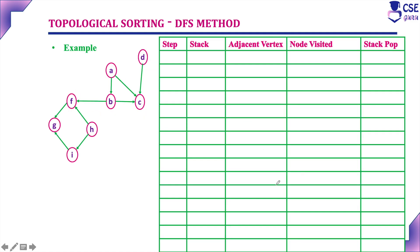Here we will discuss the second example implemented with the DFS method. This is the given graph. For this graph, the first step is to select one vertex as the arbitrary vertex. Considering alphabetical order, the first letter is A, so the starting vertex is A. Initially, we have not yet considered its adjacent vertices; the node visited is A and no vertices have been popped from the stack.